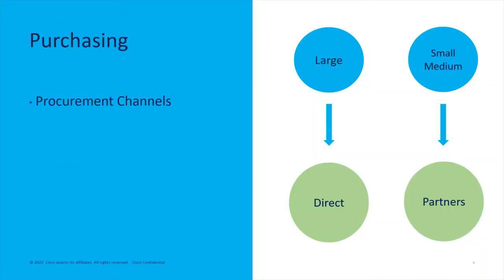So, purchasing. There are really two kinds of relationships that exist. One is if you're a large customer, you have a direct relationship with Cisco, which means you talk directly to TSAs — technical solutions architects — or CSSs, which are the cybersecurity specialists. If it's Firepower, there are other people on the Cisco side, like account managers and HTOMs, and we'll go into who those are later.